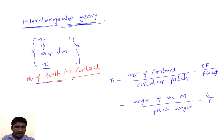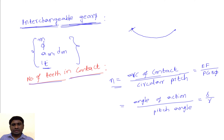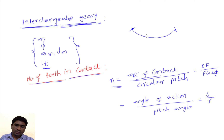This is called interchangeability of gears. Number of teeth in contact: whenever two gears are in engagement, we need to know how many teeth are in contact. That is given as the arc of contact divided by circular pitch. The arc of contact is measured along the pitch circle — it is the length from the starting of engagement to the end of engagement. The circular pitch is the distance from a point on one tooth to the corresponding point on the next consecutive tooth along the pitch circle.